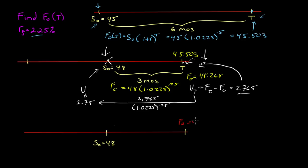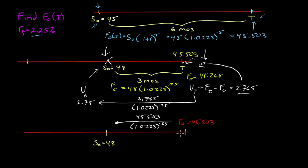Let's do it the other way. Our F-naught was 45.503. Instead of bringing money forward, calculating the difference, and bringing it back, let's just bring the 45.503 back and calculate the difference directly. We take 45.503 discounted by (1.0225)^0.25 for three months and we get 45.25. These two dollar values are now at the same point on the timeline. So 48 minus 45.25 is 2.75. Since this 2.75 is already at the point in time where we want to be, we don't have to do anything with it.